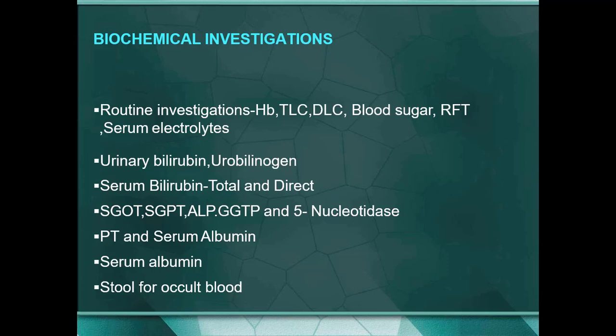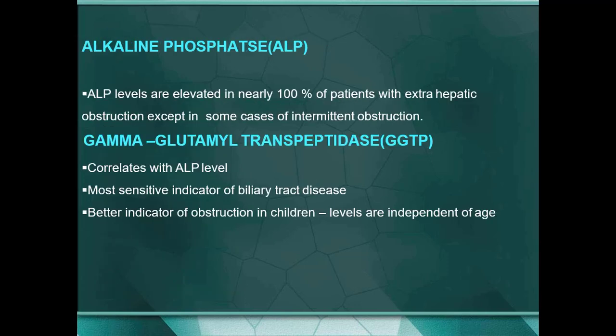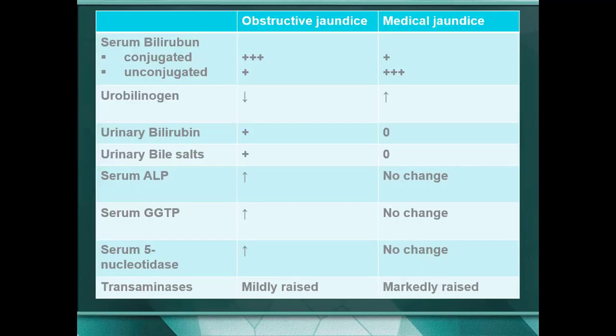PT is prolonged as I already told due to coagulation profile changes. Serum albumin will be low in these patients because the liver is damaged. You also need to look for stool occult blood to exclude malignant causes. Alkaline phosphatase and gamma-glutamyl transferase (gamma-GT) are very important indicators of obstruction.